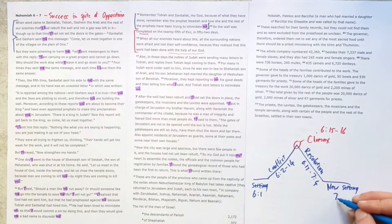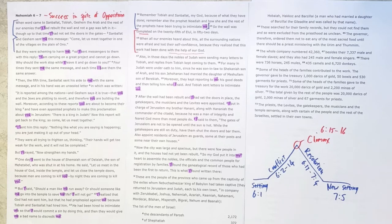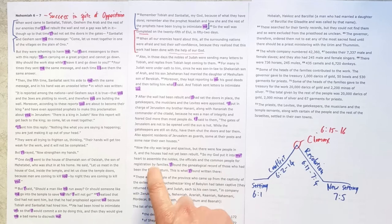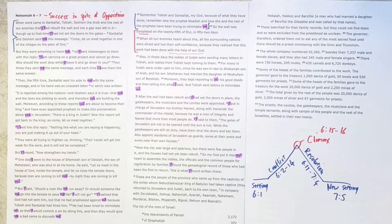And the new setting is given in 7 verse 5, where the focus shifts from building the wall to building the people within the wall. So we see God had put it in my heart to assemble the nobles, the officials, and the common people for registration. And then flowing on, chapter 8 we'll see Nehemiah teaching the people from God's word, or Ezra the scribe reading and the people being taught. So they're being formed into the people they were supposed to be within this now-completed wall.